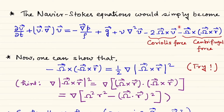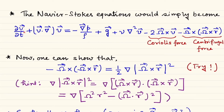The Coriolis term vanishes when v is zero — where v is the fluid velocity with respect to the rotating frame of reference. So if something is at rest with respect to the rotating frame, the Coriolis force is zero, but the centrifugal force will still be present.